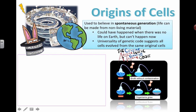Cytosine, adenine, guanine, and thymine are the four bases in DNA that make up the genetic code. This brings us to Louis Pasteur — you've probably heard of him. If you've heard of pasteurized milk, the name comes from this guy.